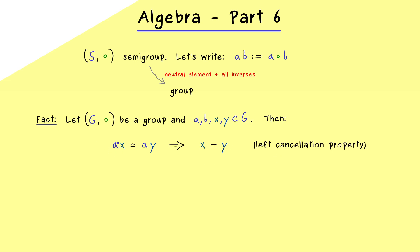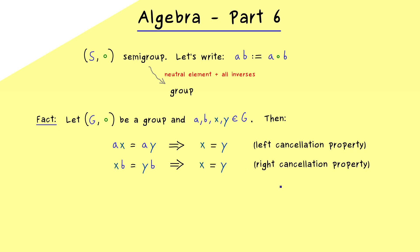In a similar way we can also consider the equation with b from the right-hand side. The result is the same: we can cancel b from the right, so we get x equals y as well. This is the right cancellation property, and it works in every group.